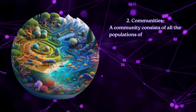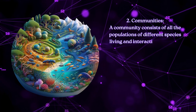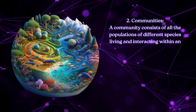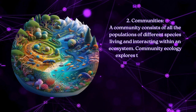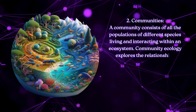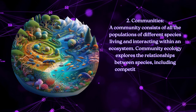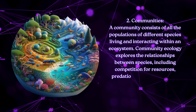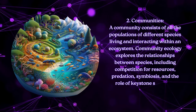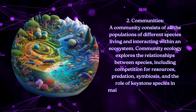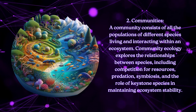Communities: A community consists of all the populations of different species living and interacting within an ecosystem. Community ecology explores the relationships between species, including competition for resources, predation, symbiosis, and the role of keystone species in maintaining ecosystem stability.